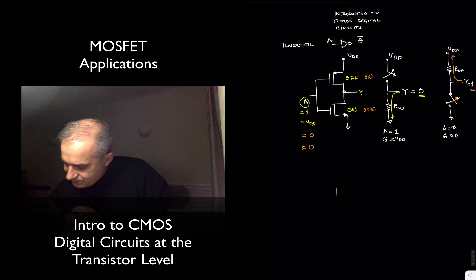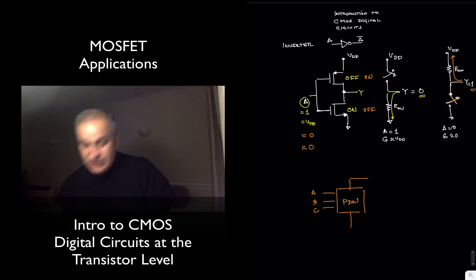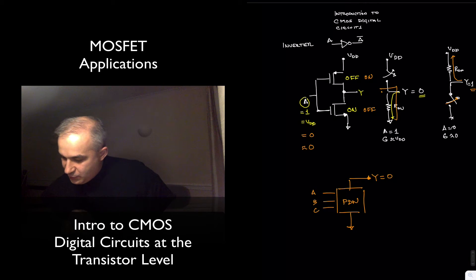In general though, remember, looking at this video, we are going to have a pull-down network, meaning a network of transistors, that when you have A, B, C logical levels high, your output is going to be pulled down to zero. This network is a pull-down network that ties the output to ground.